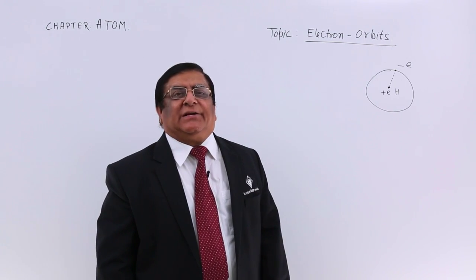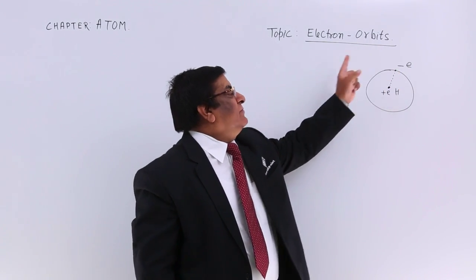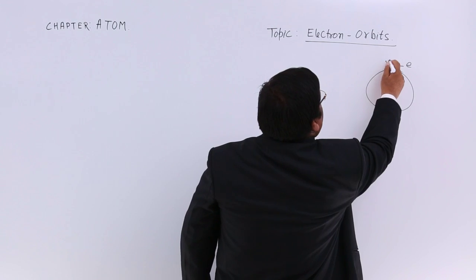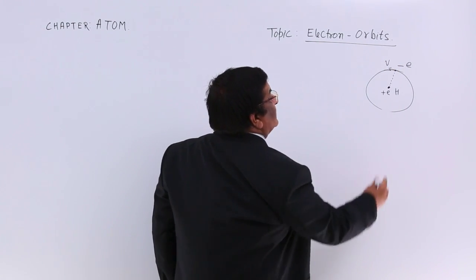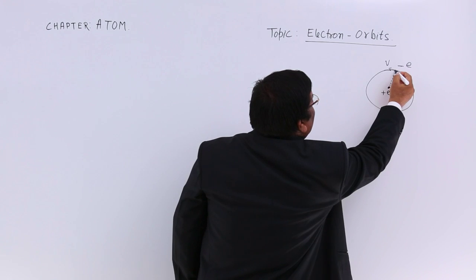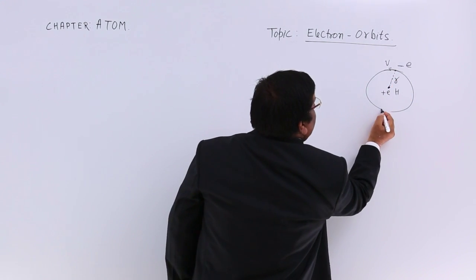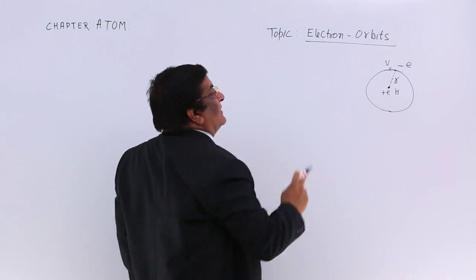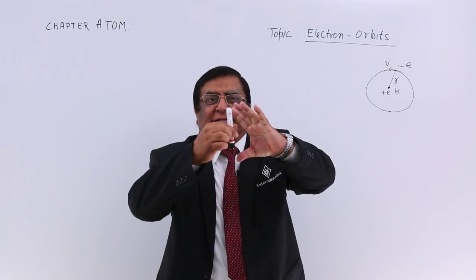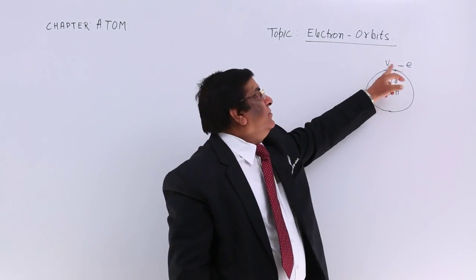The electron has two types of energy. One is due to its motion because it is moving, and the other is due to the force of attraction between the minus and plus charges separated by the radius r of the orbit. So there is a potential energy due to the force of attraction and the distance, and there is a kinetic energy due to velocity.